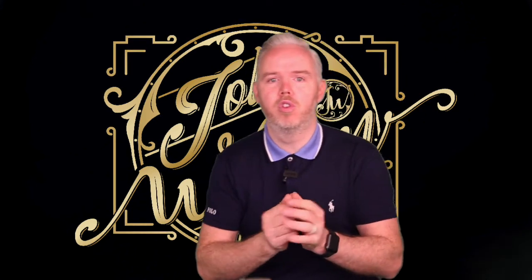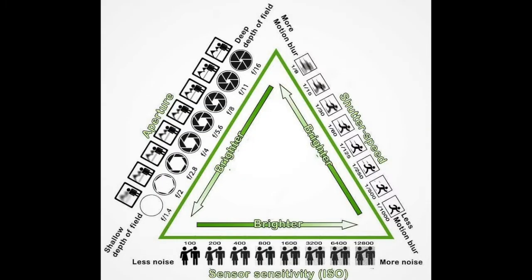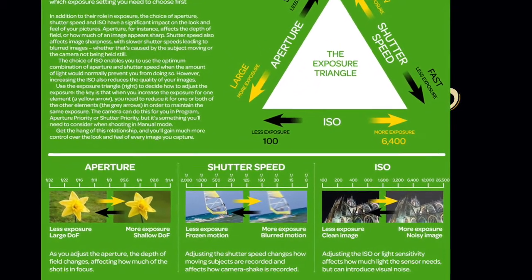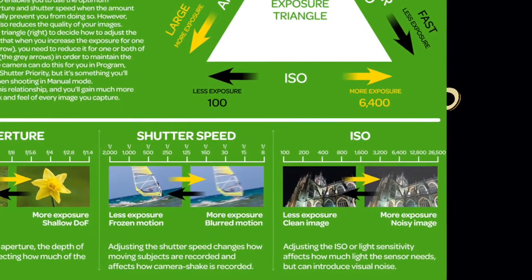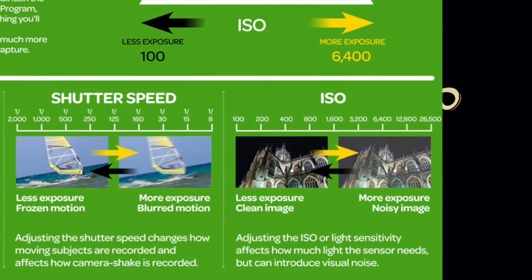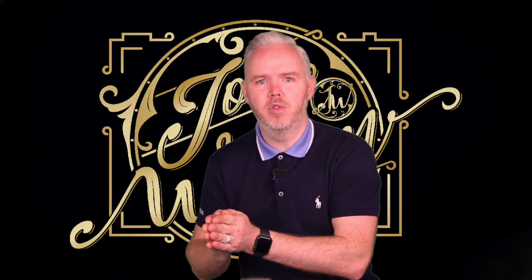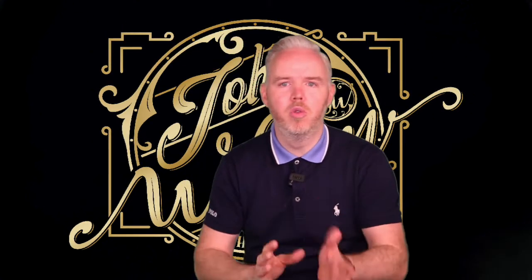Then you've got your ISO, which is basically how sensitive the sensor is going to be on the camera. A lower ISO number, such as 100 or 150, means the photograph is going to be darker. The higher the number, the brighter the photograph is going to be, but at the same time that gives you more grain and noise on your photograph — like little grains of sand on the top of your image.